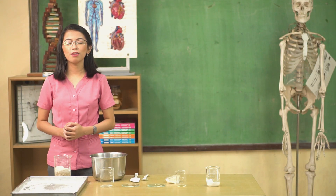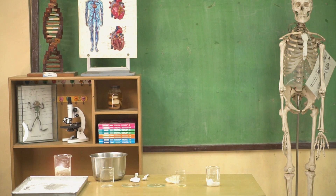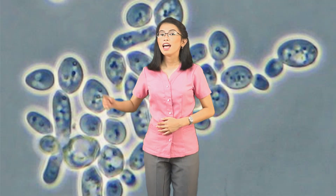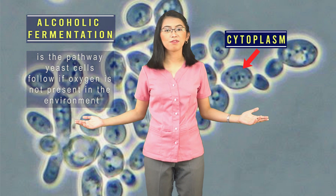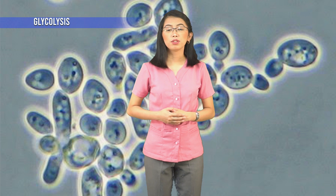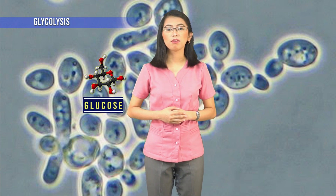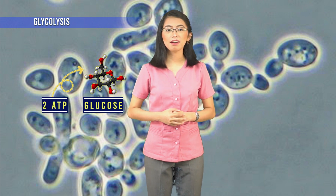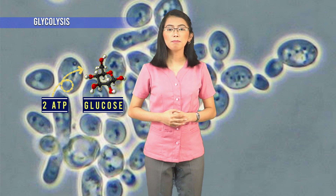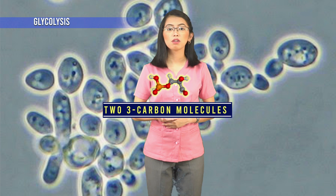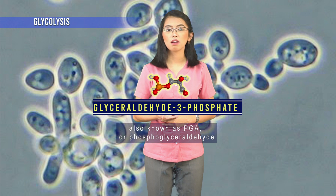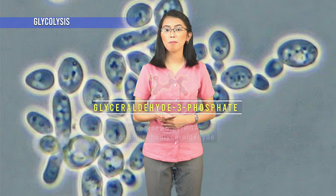Let us look closely at how alcoholic fermentation occurs inside the yeast cell. Alcoholic fermentation is the pathway yeast cells follow if oxygen is not present in the environment. It occurs in the cytoplasm of the cell. The glucose from the flour is converted to pyruvic acid through the process of glycolysis. During glycolysis, glucose, a 6-carbon sugar molecule, has energy added to it from two ATP molecules, making some bonds unstable and the glucose molecule more easily broken down. After passing through several more enzyme-controlled reactions, the 6-carbon glucose is broken down to two 3-carbon molecules called glyceraldehyde-3-phosphate, also known as PGA or phosphoglyceraldehyde, which undergo additional reactions to form pyruvic acid.